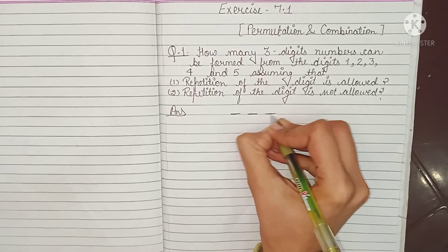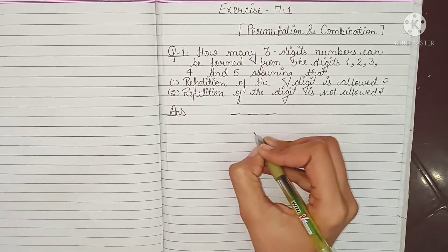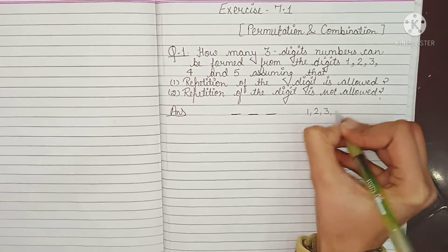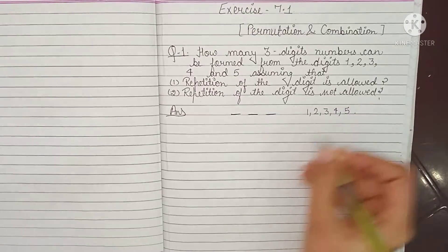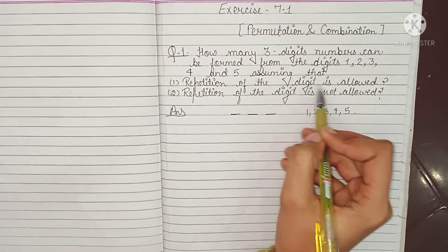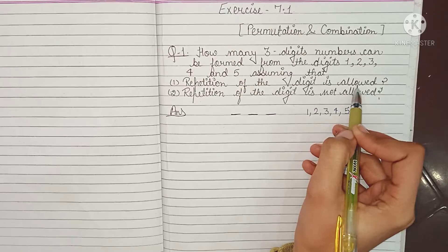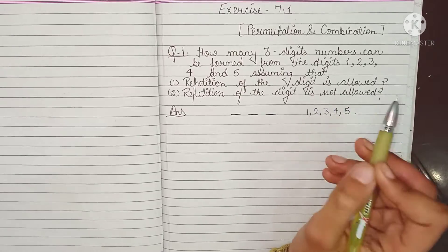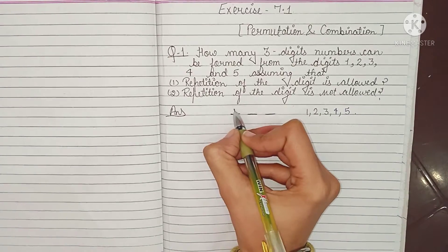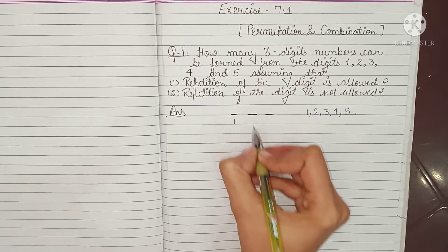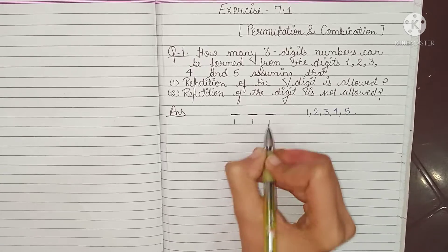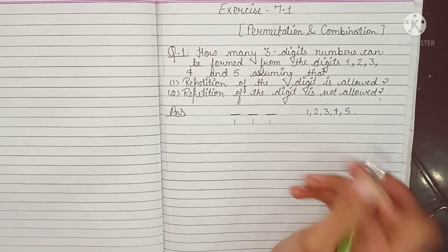You have to form 3-digit numbers from 1, 2, 3, 4, 5. In the first part, repetition of the digit is allowed. Repetition allowed means if you have 1 at the 1st place, then 2nd place can also be 1, and 3rd place as well — meaning 1 digit can appear many times.